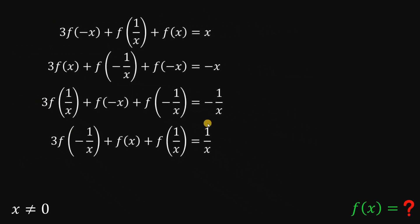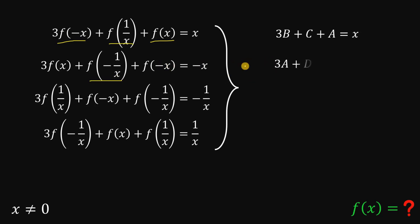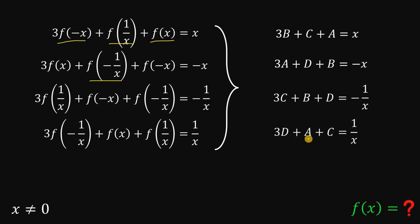Now, to make this simple, we replace f of x with a, f of negative x with b, f of 1 over x with c, and f of negative 1 over x with d. So our four equations become: 3b + c + a = x; 3a + d + b = negative x; 3c + b + d = negative 1 over x; and 3d + a + c = 1 over x.